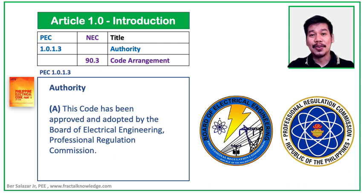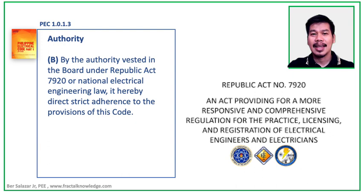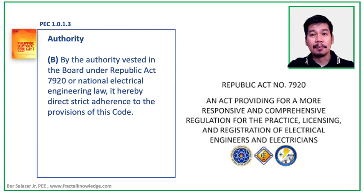PEC Section 1.0-1.3, Authority, states that this code has been approved and adopted by the Board of Electrical Engineering, Professional Regulation Commission. PRC and the Board of Electrical Engineers have the authority to command the adoption and promulgation of the code. By the authority vested in the Board under Republic Act 7920, or the National Electrical Engineering Law, to regulate the practice of the electrical industry, the Board, together with all electrical practitioners, are mandated to strictly adhere to the provisions of the code.